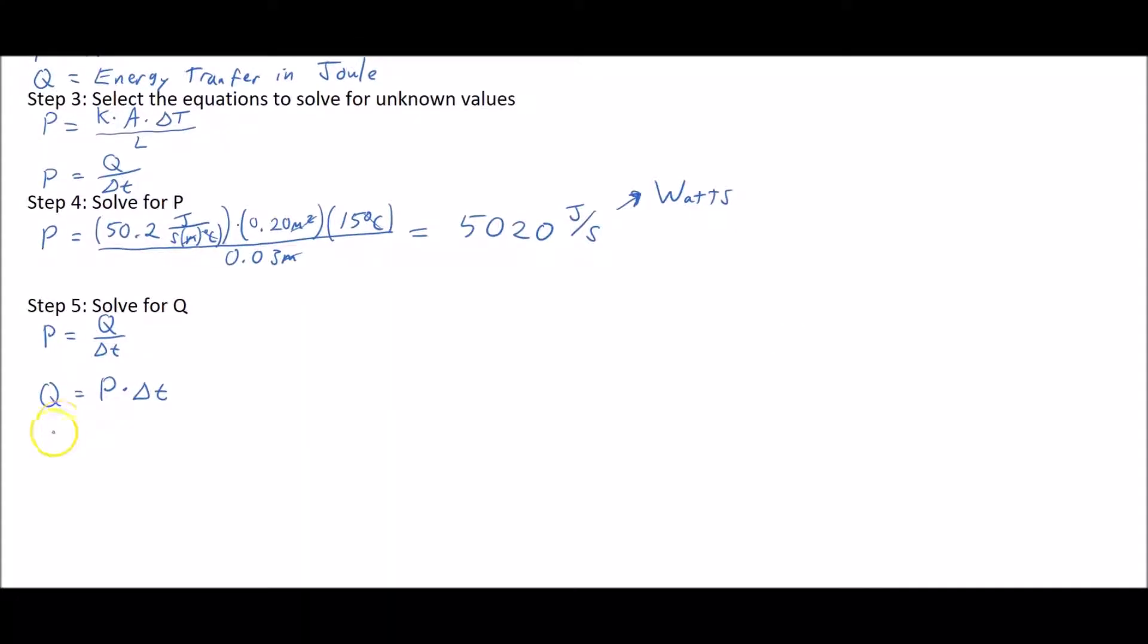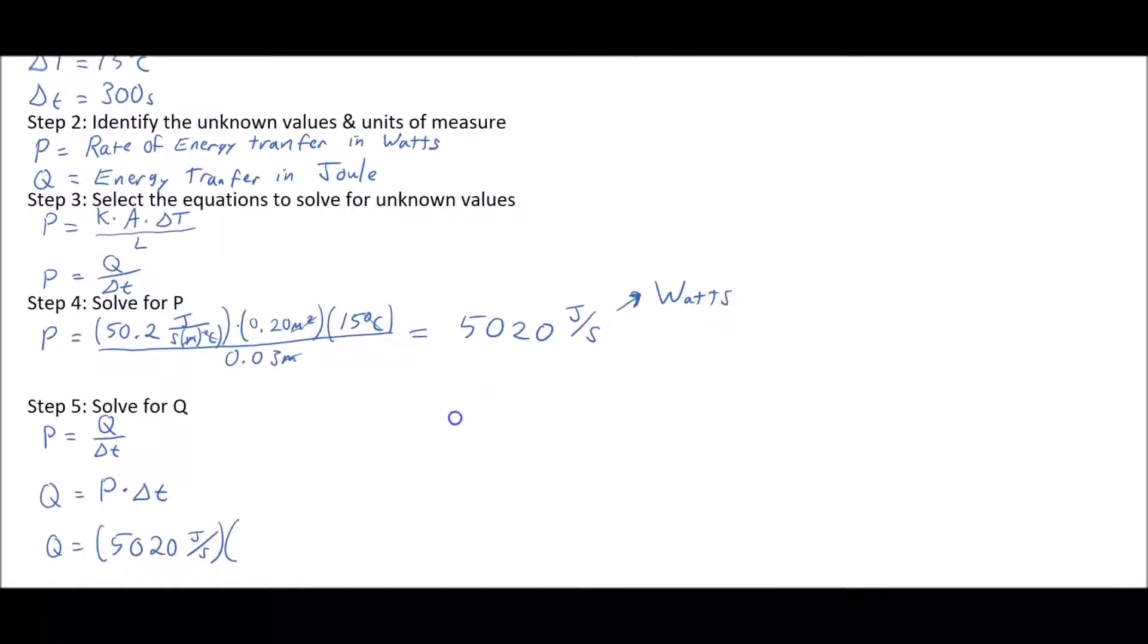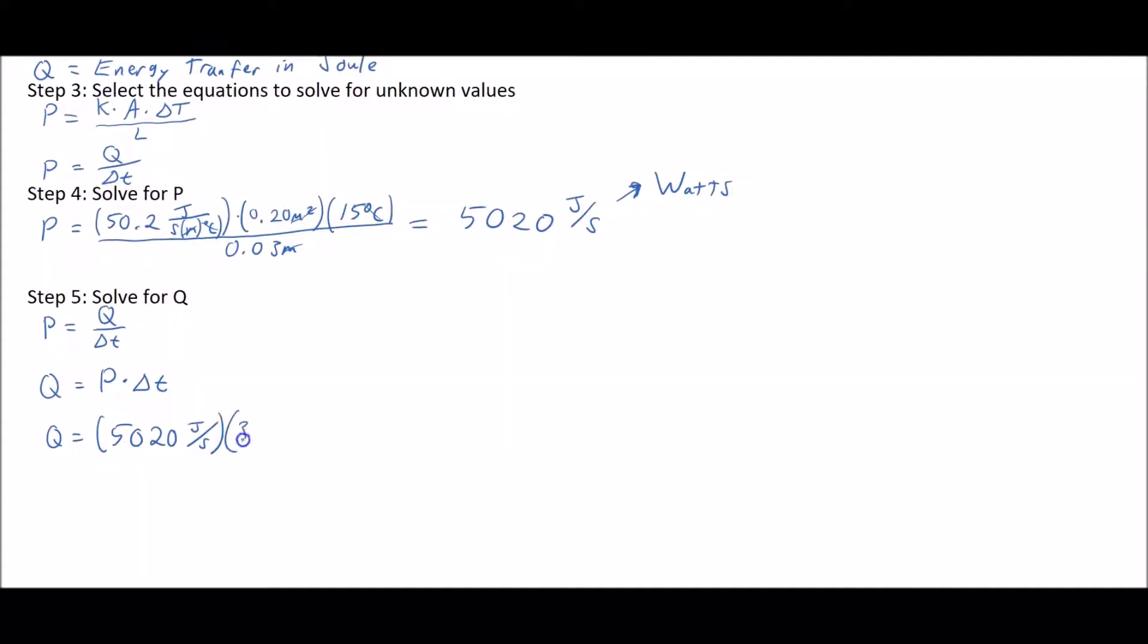Q is equal to 5,020 joules per second—I just left it as that because we're about to cancel it out—times delta t which up here was 300 seconds. Seconds will cancel out and Q ends up being a very large number: 1,506,000 joules.